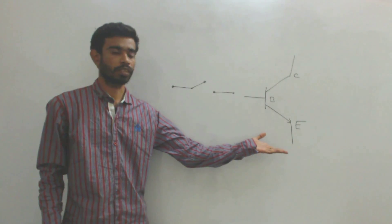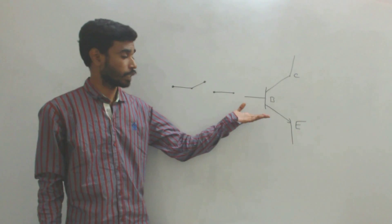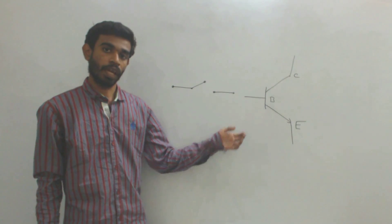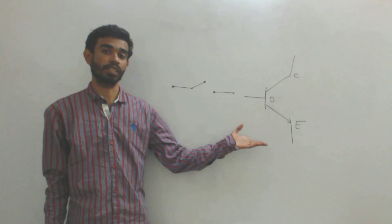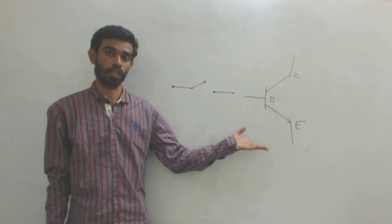In a bi-junction transistor, the collector current is limited by its base current. Hence, a bi-junction transistor can be used as a current control switch.